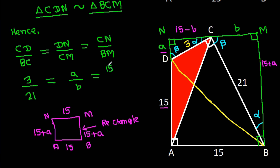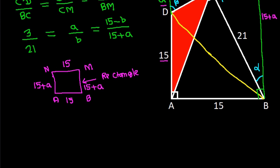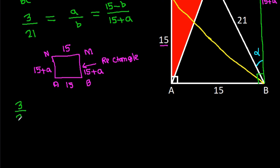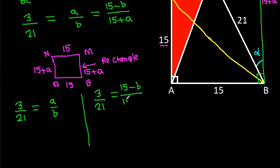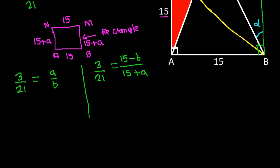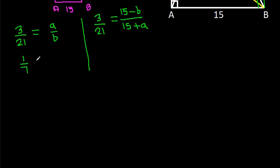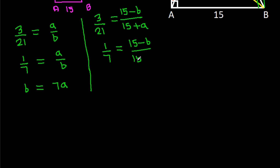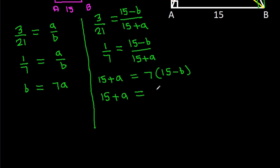So we get 3 by 21 equals A by B, giving us 1 by 7 equals A by B, so B equals 7A. We also get 3 by 21 equals 15 minus B by 15 plus A. Cross-multiplying gives 15 plus A equals 7 times 15 minus B, so 15 plus A equals 105 minus 7B.